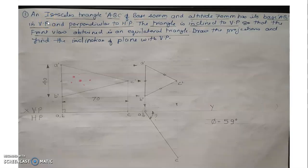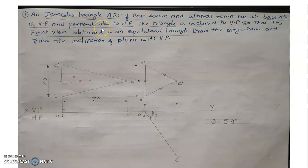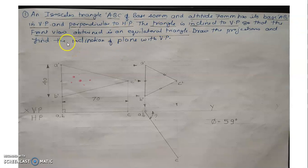First of all, read the problem. An isosceles triangle ABC of base 40 mm and altitude 70 mm has its base AB in VP and perpendicular to HP. The triangle is inclined to VP so that the front view obtained is an equilateral triangle. Draw the projection and find the inclination of the plane with VP.